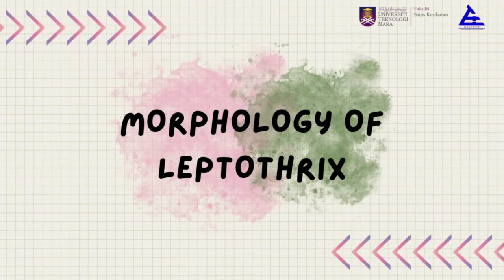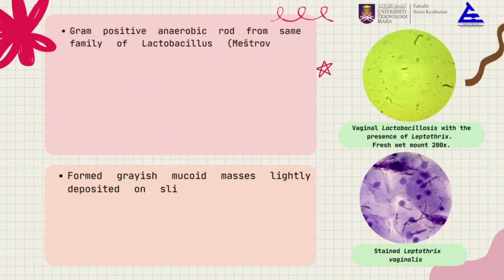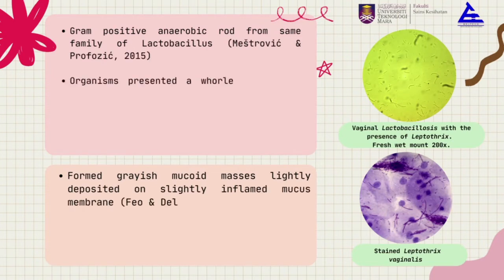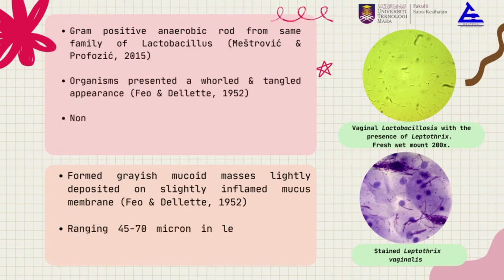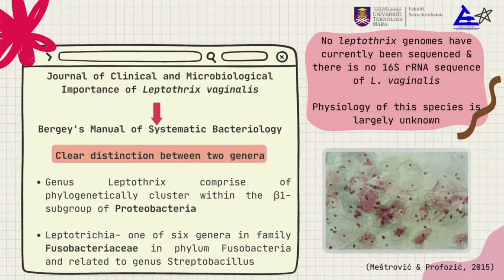For the morphology of Leptothrix vaginalis, it is gram-positive anaerobic growth from the same family as Lactobacillus. It is non-branching, segmented, and narrow thin. It can also form greyish mucoid masses which are slightly deposited on slightly inflamed epithelium. Its length ranges around 45 to 70 microns.